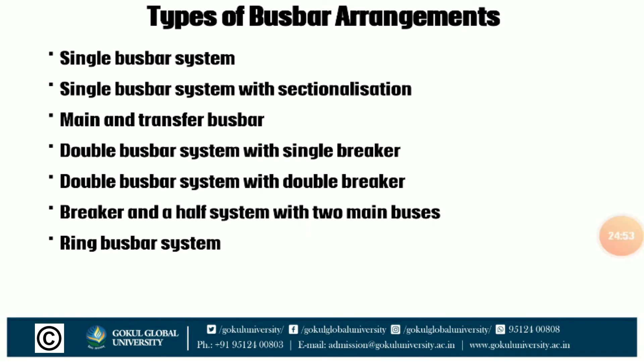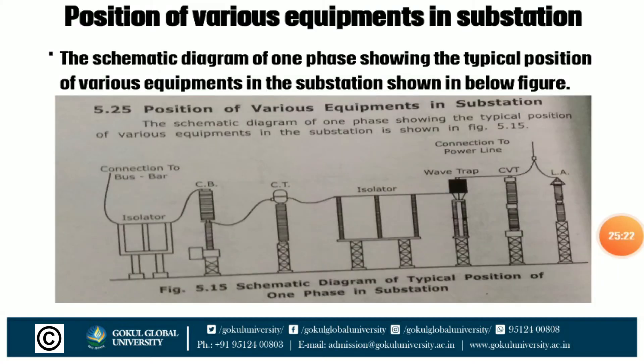Types of bus bar arrangement: first, single bus bar system; second, single bus bar system with sectional modifications; third, main and transfer bus bar; fourth, double bus bar system with single breaker; fifth, double bus bar system with double breaker; sixth, breaker-and-a-half system with two main buses; and last, ring bus bar system. Now we discuss about the position of various equipment in the surface zone.